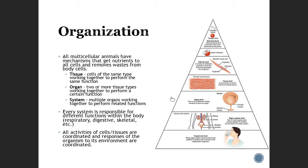An organ could be on its own, but most of the time you're going to see them come together to form systems — multiple organs working together to perform a related function. For example, the urinary tract system includes your kidneys, ureter, bladder, and urethra, all coming together to help your body eliminate excess waste, water, and other substances. All your different systems together create the organism.